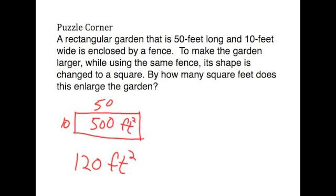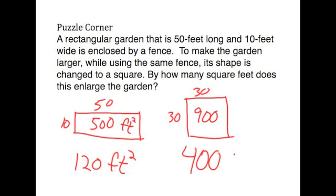If we rearrange it as a square, then 120 divided by 4 would be a square, and each side would be 30 feet. 30 times 30 is 900. We can do the rest in our head. The increase is 900 minus 500 or 400 square feet. Congratulations to those of you who got the puzzle.